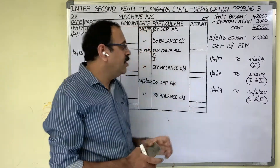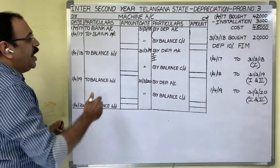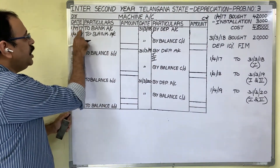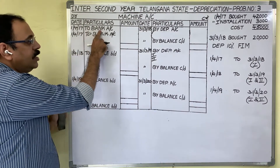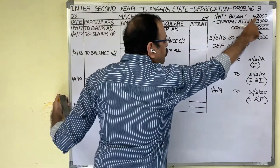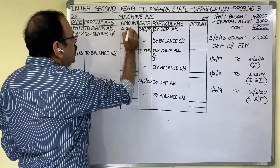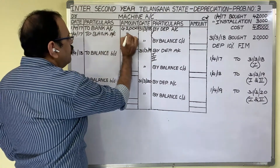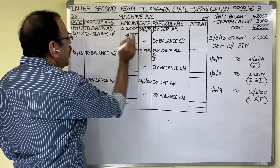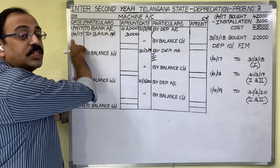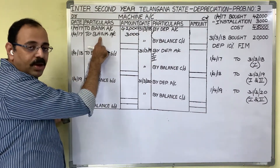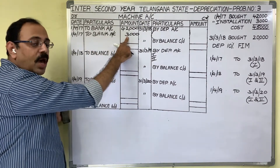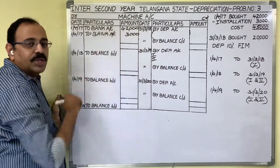Let us solve this problem. When the asset is purchased on 1st April 2017, we write 'To Bank' — the first asset is purchased for 42,000 rupees. On the same day, 3,000 rupees are spent for installing that asset, so for the installation charges we also write 'To Bank.' The cost becomes 45,000 rupees.